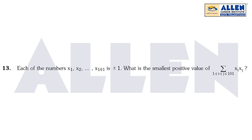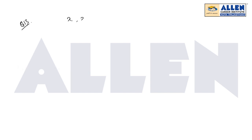Now let's start with question number 13. The question states that there are 101 numbers x1, x2, x3... and all their values are either +1 or -1. We need to find the smallest positive value of the summation where i is greater than or equal to 1, j less than or equal to 101, i less than j, of xi·xj.